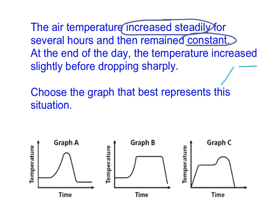At the end of the day, the temperature increased slightly again. So we have another increase before dropping sharply. Dropping sharply means it's going to go down. So we're looking for something that looks kind of like this, graph A, B, or C.